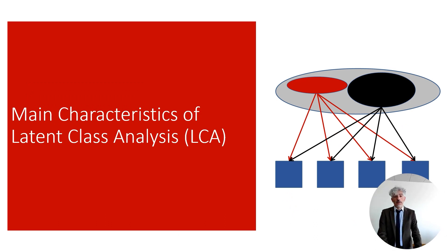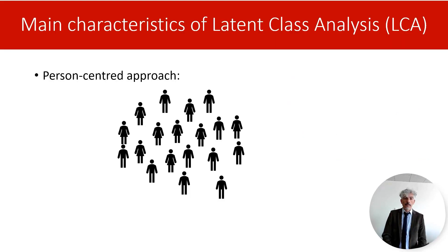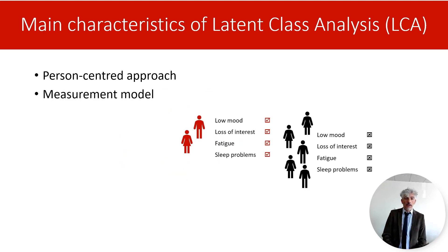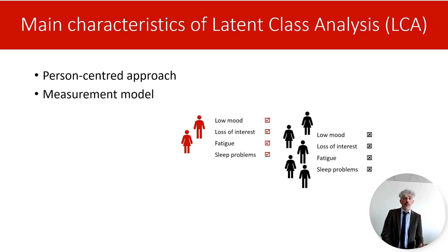I will now illustrate the main characteristics of latent class analysis. Using the example of different symptoms of depression, I want to highlight that latent class analysis is a person-centered approach. It assumes that the pool of people we observe is made up of a mixture of individuals — different categories of individuals that differ in distinct ways from each other. Latent class analysis is a measurement model. It assumes that what explains the differences we observe in behavioral patterns are some unobservable latent characteristics.